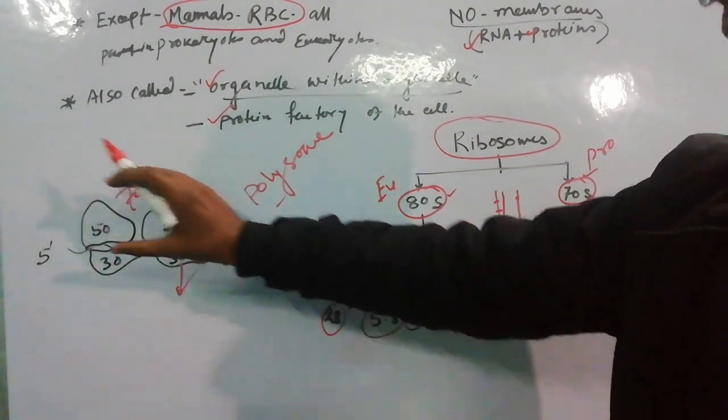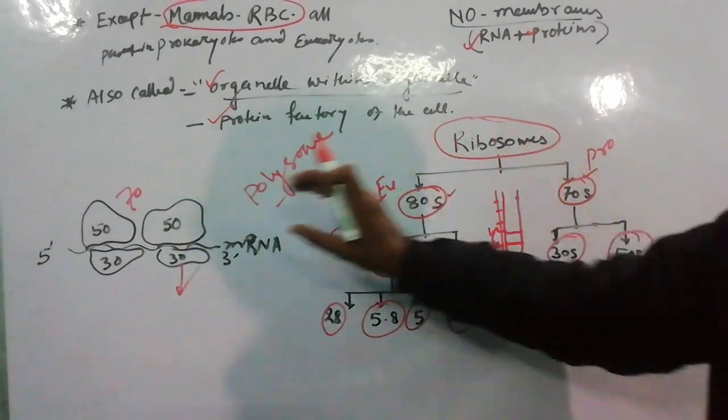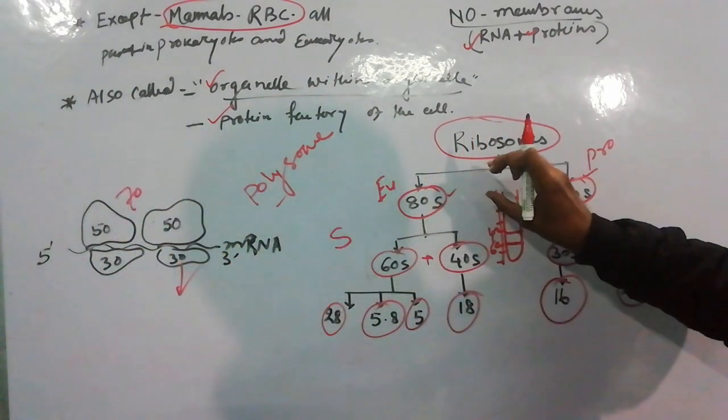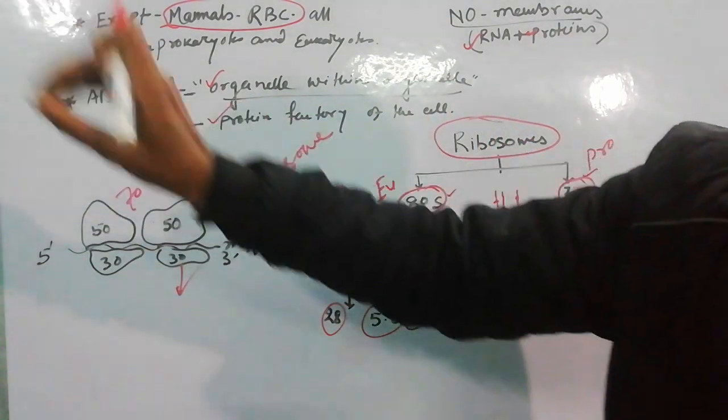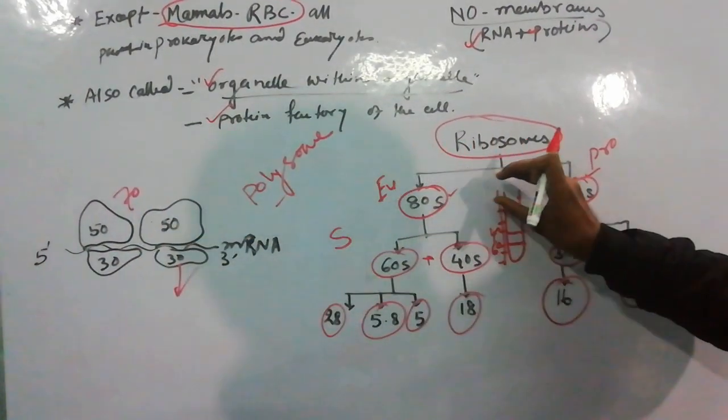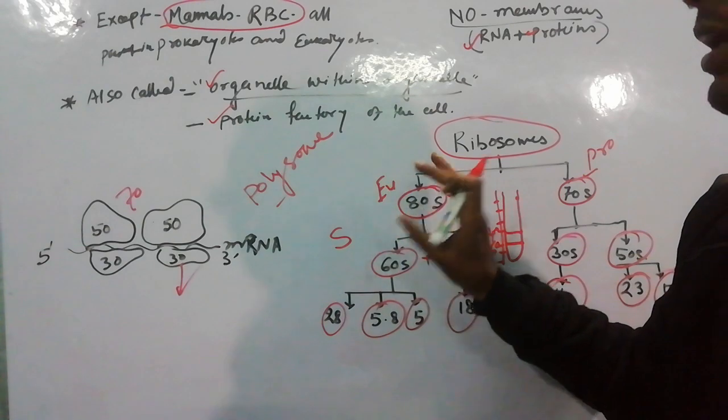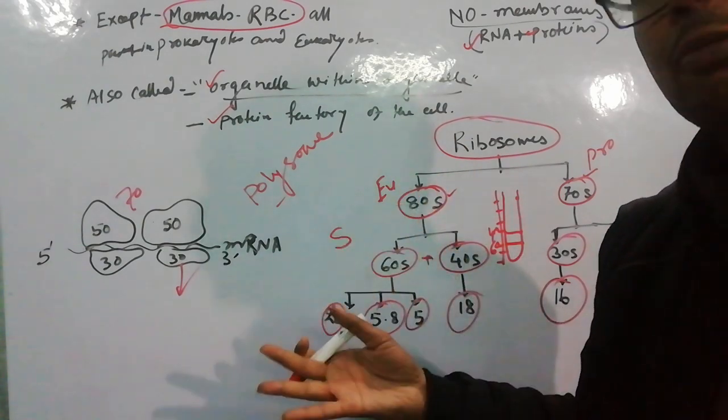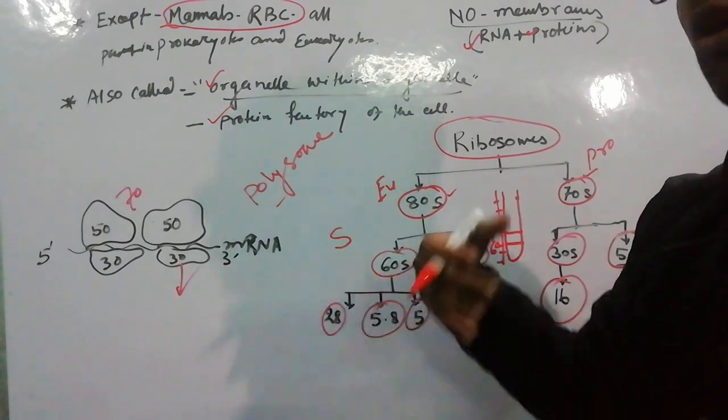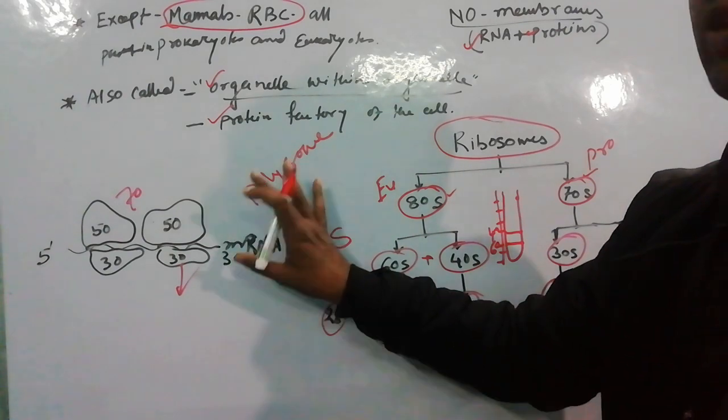This is 70S type ribosome, 50 plus 30. From this, a chain formation occurs where it comes like a line - 50S, 30S, 50S, 30S subunit. In one mRNA there are many such subunits of ribosome, 70S subunit type. So we call it polysome instead of polyribosome, because many ribosomes are together on mRNA during protein preparation.